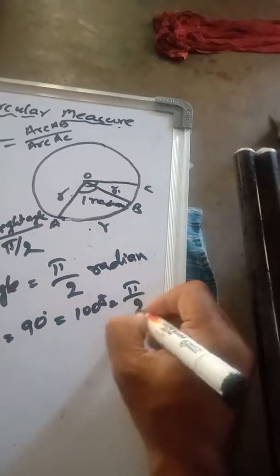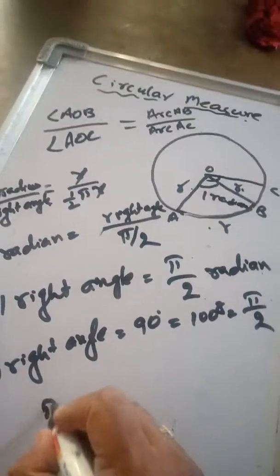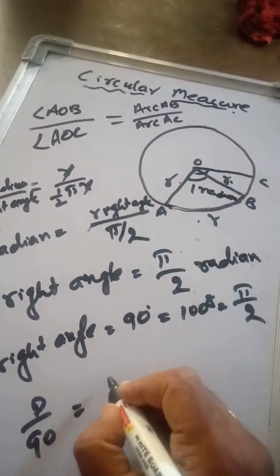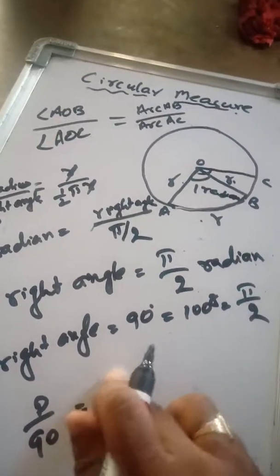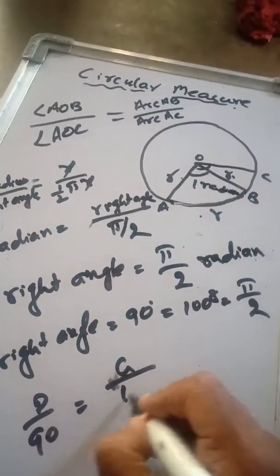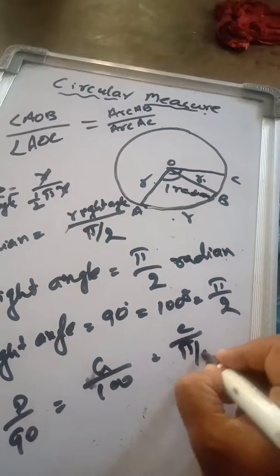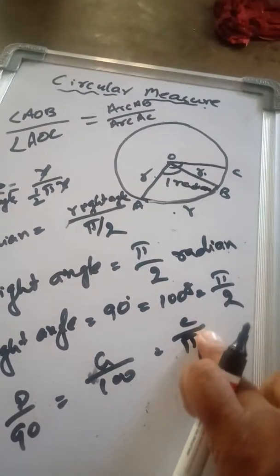Using the direct formula: D/90 = G/100 = C/(π/2). And this 2...